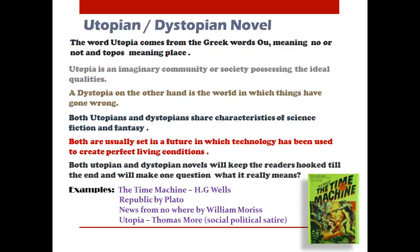Utopian and dystopian novels are two opposite forms where two different communities are considered. The word 'utopia' comes from the Greek: 'ou' meaning 'no' or 'not,' and 'topos' meaning 'place.' Utopia is an imaginary community possessing ideal qualities where everything is perfect, whereas dystopia is the opposite — a place where nothing is perfect and everything is wrong. Both share characteristics of science fiction and fantasy, set in imaginary places.